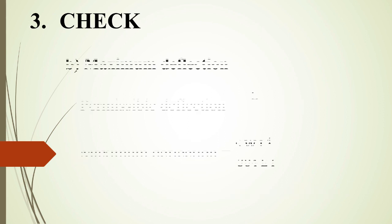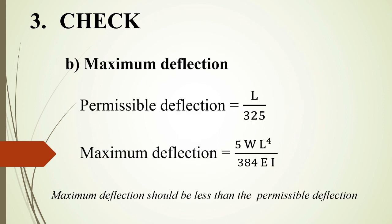Now check for maximum deflection. The permissible deflection is the effective span divided by 325 (L/325). The actual maximum deflection for a simply supported beam carrying a uniformly distributed load is given by the standard equation: delta = 5WL⁴ / (384EI). We substitute the values of W and L into this formula.